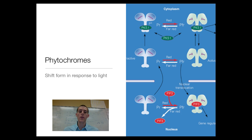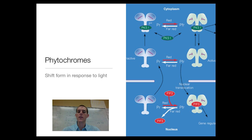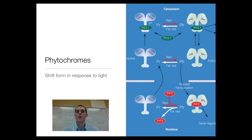Phytochromes shift form in response to the color of light they receive. They are most sensitive to light in the red and far-red end of the spectrum. We can see red light; far-red light is at the edge of what we're able to see. Phytochromes shift between two conformations — one when hit by red light and another when hit by far-red light. This shifting between forms is responsible for the plant responses we're going to talk about today.